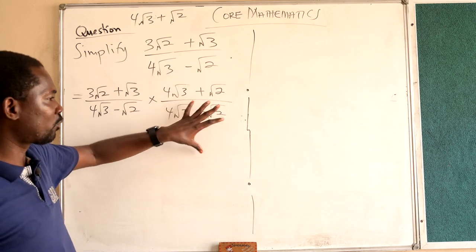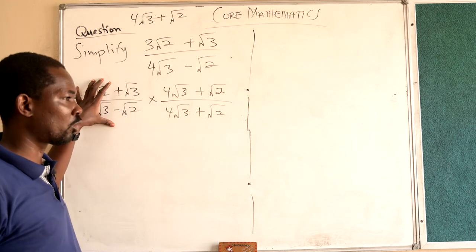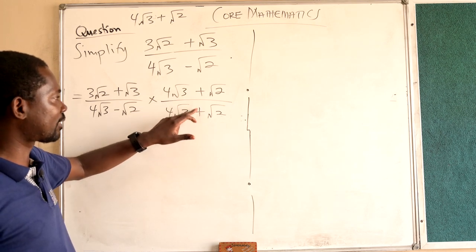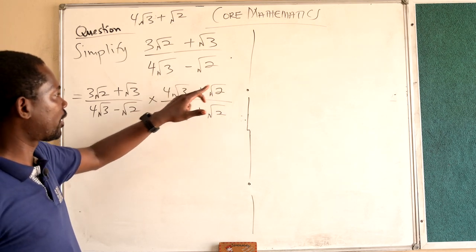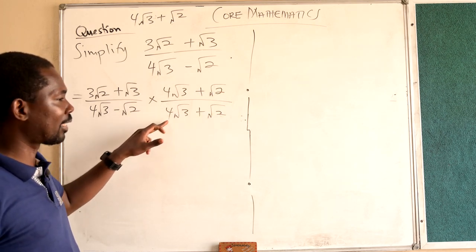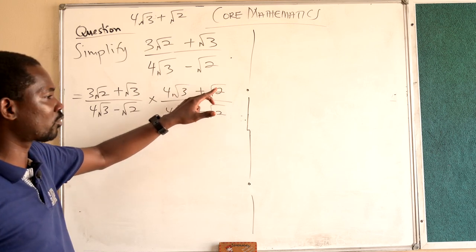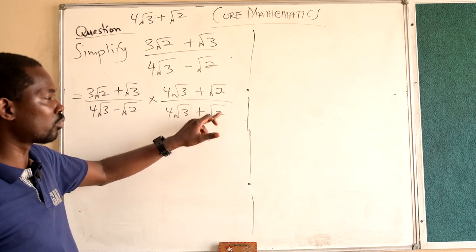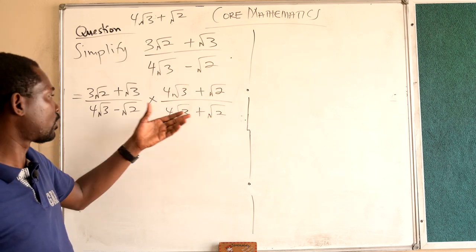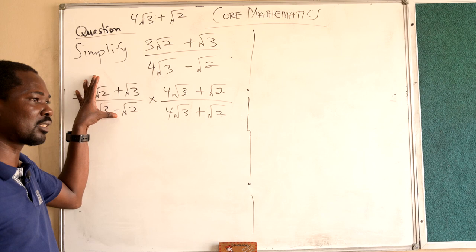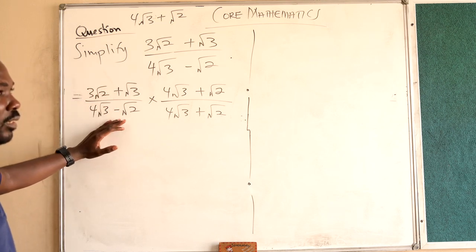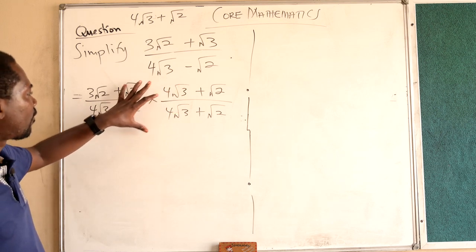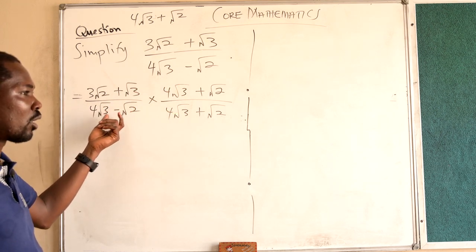The fraction we use to multiply the original expression shouldn't change its value. When we cancel 4√3 + √2 over 4√3 + √2, we get 1, so multiplying by it will not change the value. The only purpose is to remove the square root from the denominator.